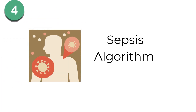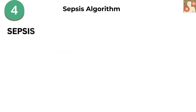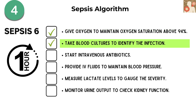Next, let's talk about sepsis management. The Sepsis-6 bundle is a straightforward approach for managing sepsis early on. Within one hour, you need to give oxygen to maintain oxygen saturation above 94%, then take blood cultures to identify the infection.